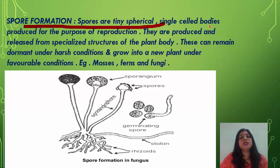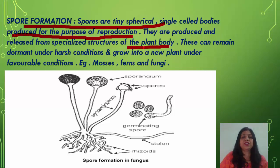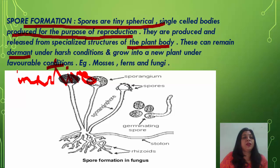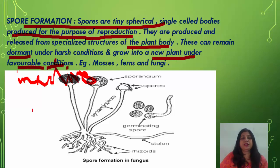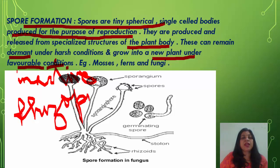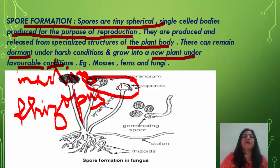Spores are tiny, spherical, single-celled bodies produced for the purpose of reproduction. They are released from specialized structures called sporangia. Spores can remain dormant — meaning inactive — under harsh weather conditions when conditions are not favorable, and they grow into a new plant under favorable conditions. Examples are mosses, ferns, and fungi. Rhizopus, known as bread mold, is a fungus — you can see the bulb-like sporangia on top where spores grow.